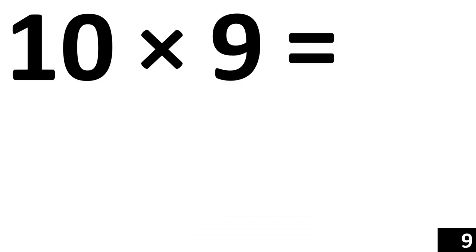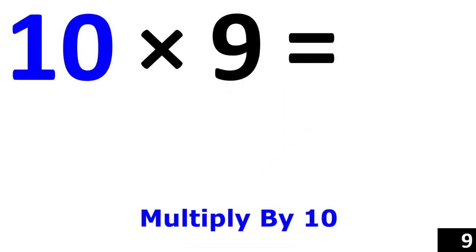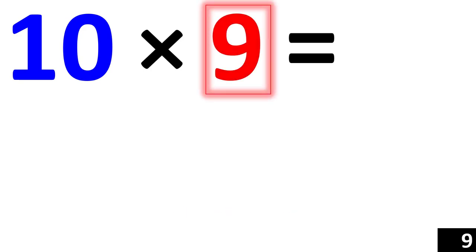For 10 times 9, we just use the rule of 10. So, 10 times 9 is 90.